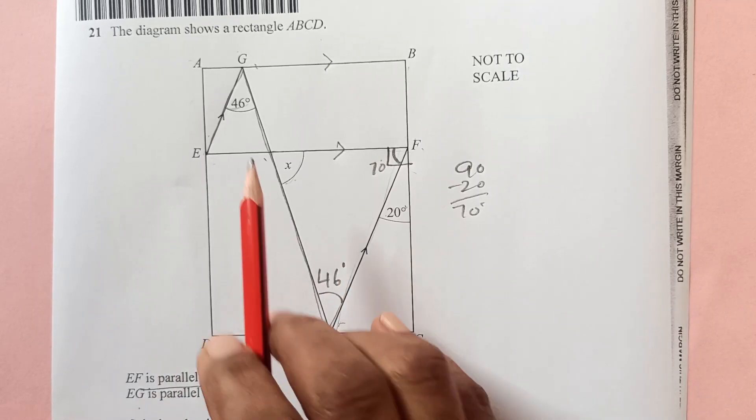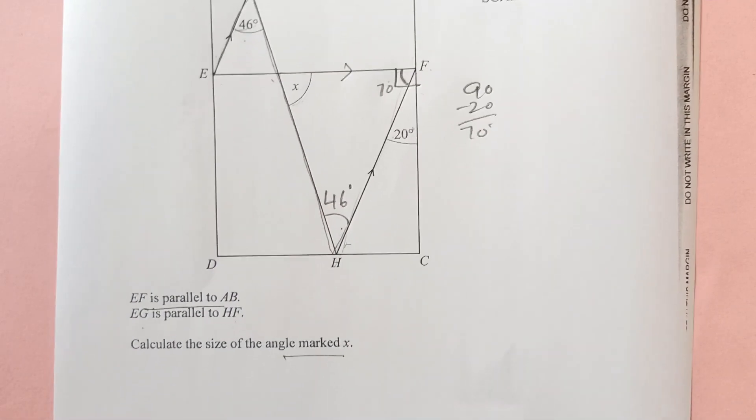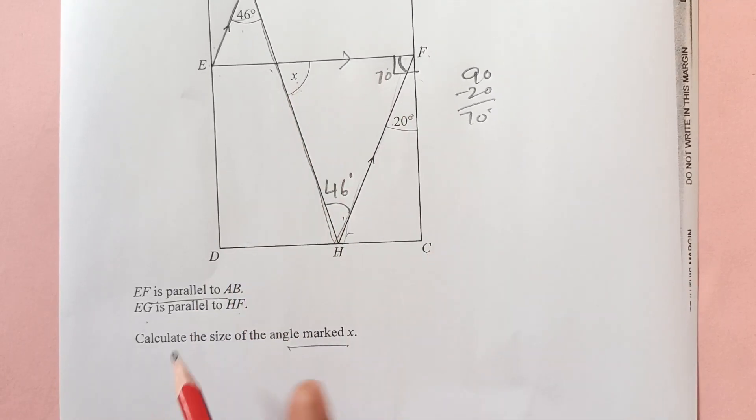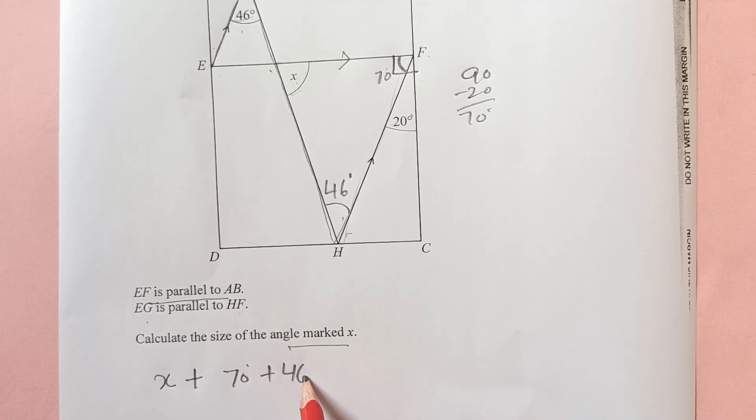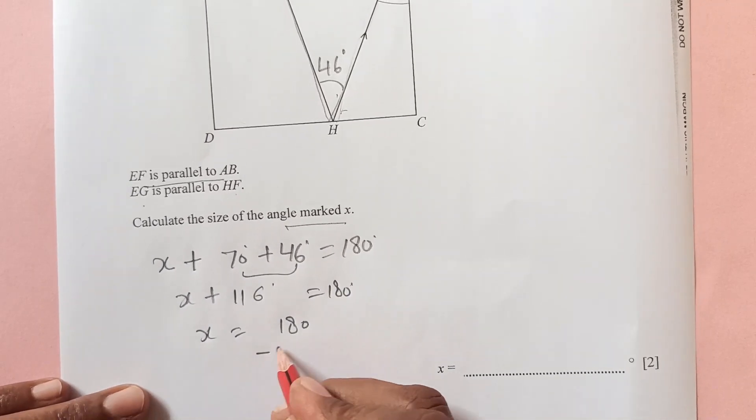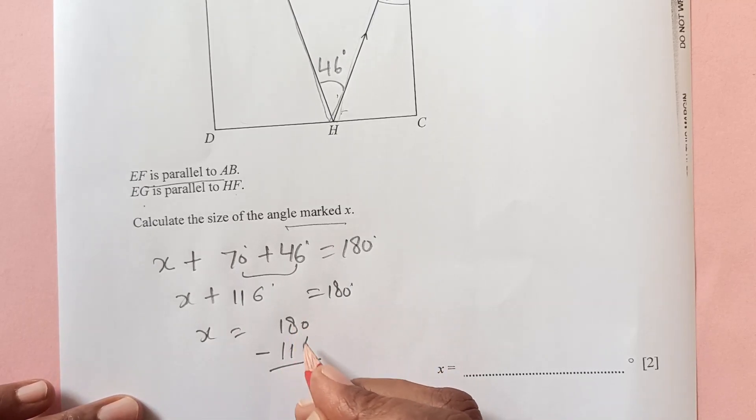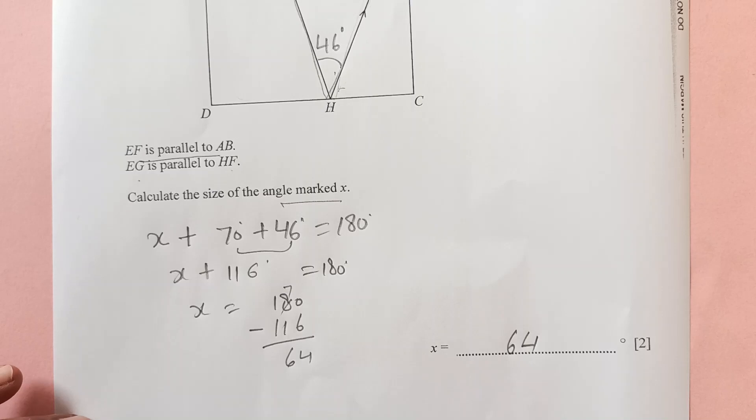So this is also 46, this is also 46. And this one is alternate, so they will be equal. Now we are done. So you have these three angles here. So we have in this triangle, x plus 70 plus 46 will be equal to 180. So x is going to be 180 minus 116, which is 10 minus 4, 6 is 4, 7, 64. So x is going to be 64, right, easy.